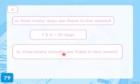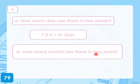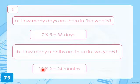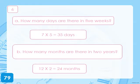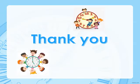B: How many months are there in 2 years? We have 12 months in a year. If we have 12 months in a year, how many months are there in 2 years? 12 months multiplied by 2 years equals 24 months. There are 24 months in 2 years. Now write the answers! Thank you, and we'll see you next week!